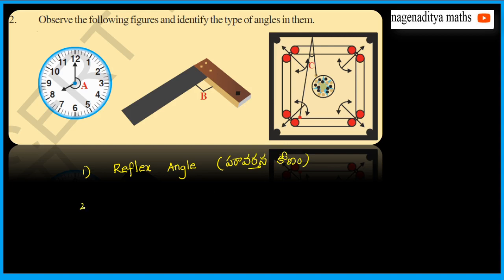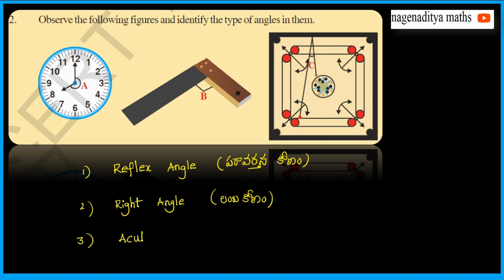The second one is a right angle. The third one is an acute angle — alpha konam.